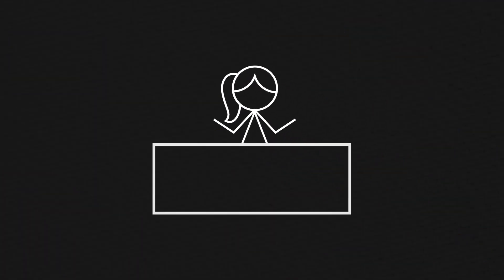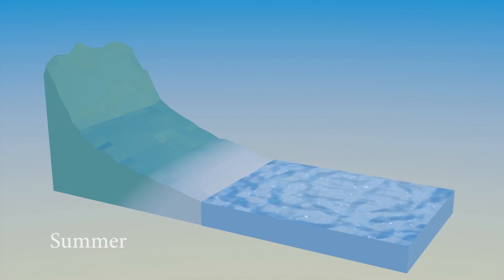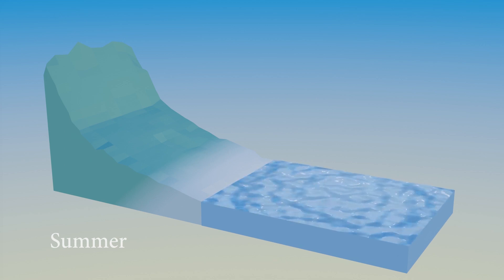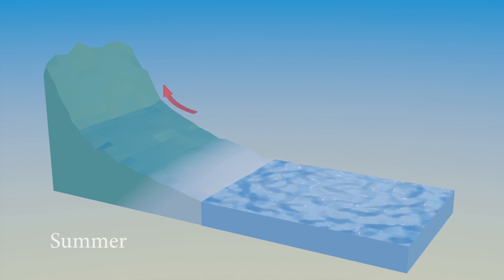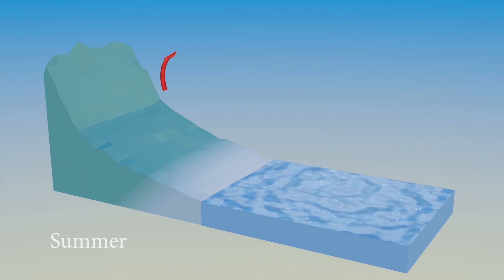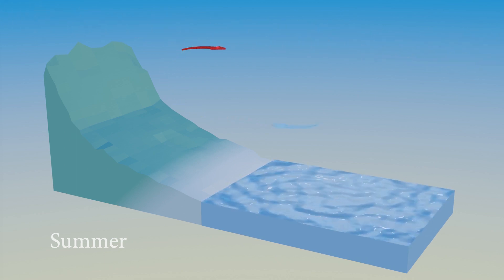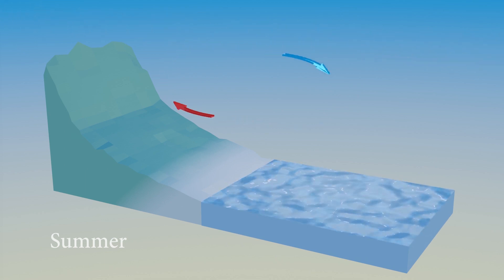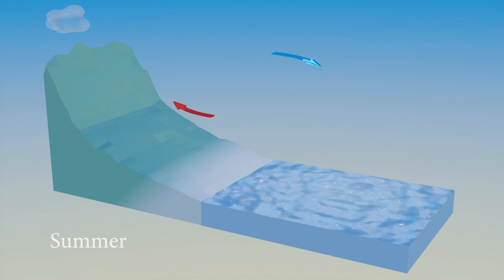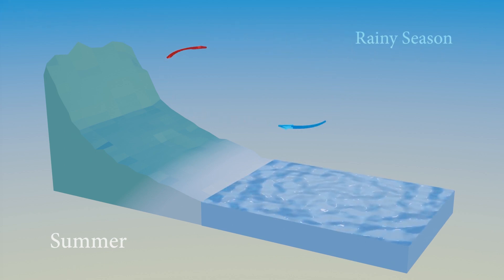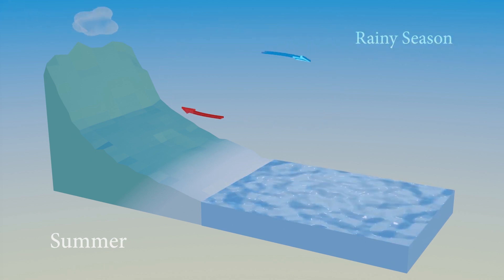But how? First of all, what is monsoon? During summer, the land heats up faster than the ocean. Hot air above the land rises, creating a gap. Meanwhile, cool, moist air from the ocean rushes in to fill this gap, bringing rain with it. This is the wet or rainy season.